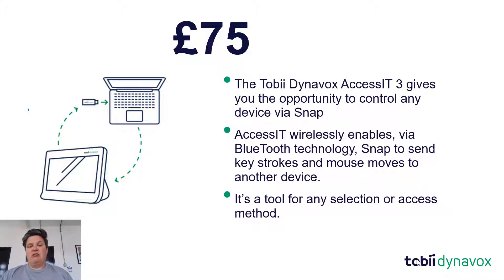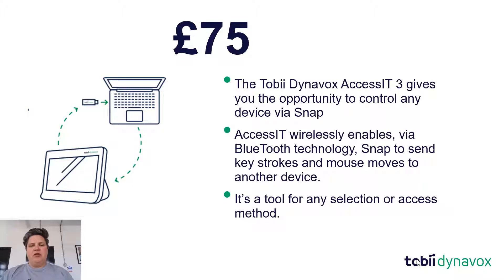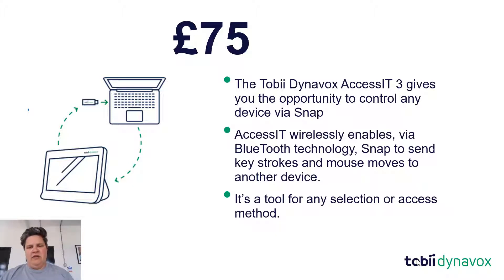Snap Core First will send keystrokes and mouse movements to another device, and what this allows us to do is use any access method to control that device. For example, you might be using an I Series and want to control a laptop to create a Word document or engage in a specific app. The dongle itself is £75 — a one-off payment — and it's plug and go, so no software needs to be installed. You plug it in, Snap Core First recognises it via Bluetooth, and away you go.